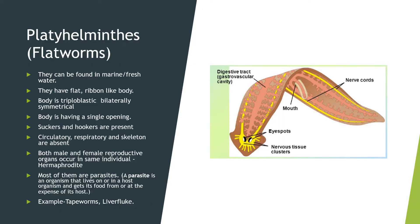Next, Platyhelminthes, also called flatworms. You can see from the image on the right side — it is flat and ribbon-type. They can be found in marine and freshwater. The body is triploblastic and bilaterally symmetrical. The body has a single opening — the mouth — and they have suckers and hooks.